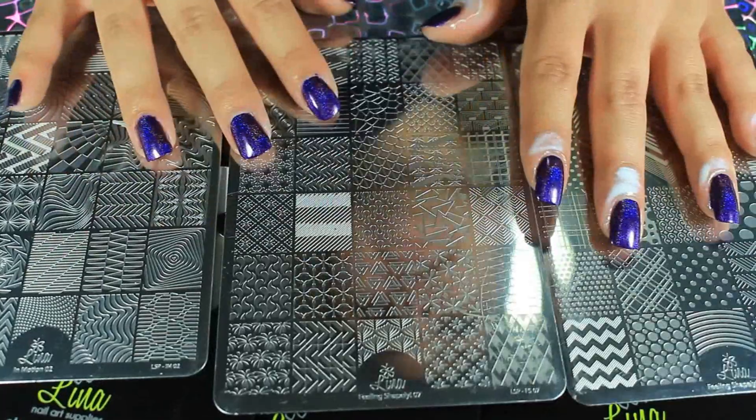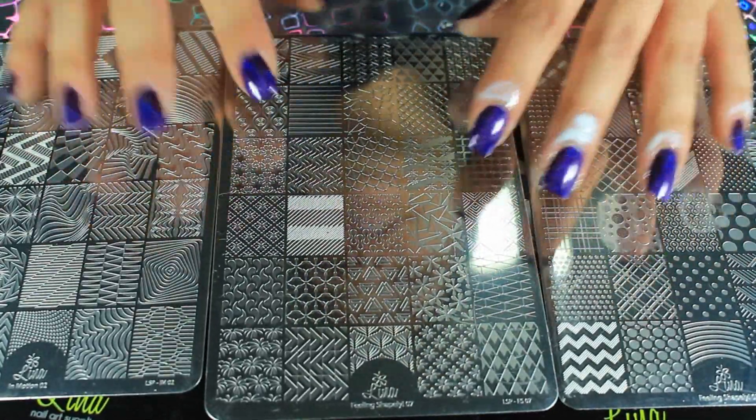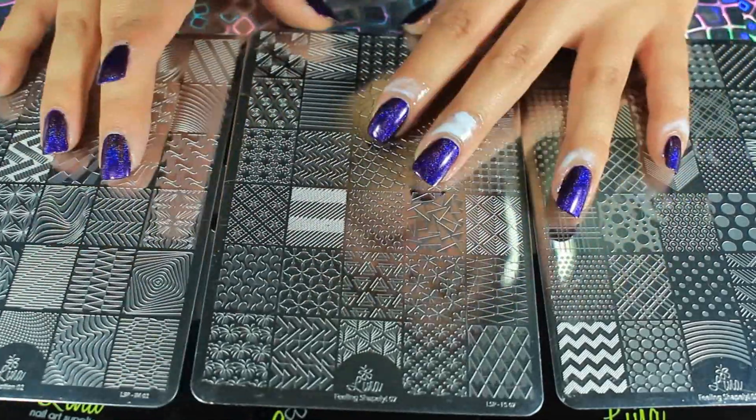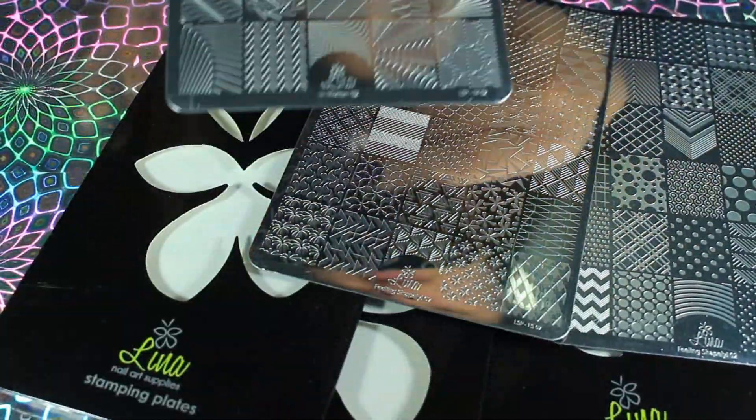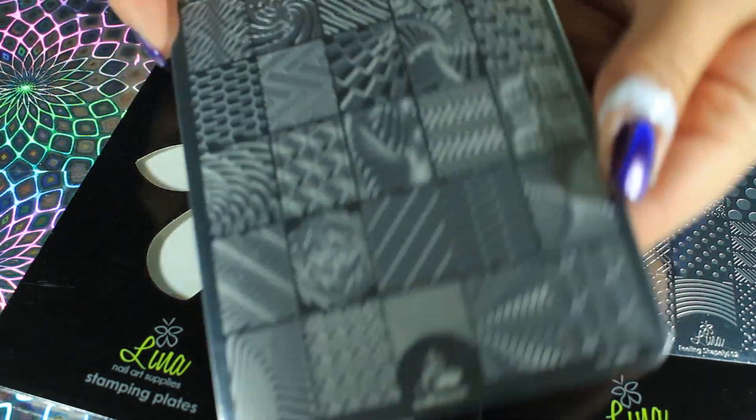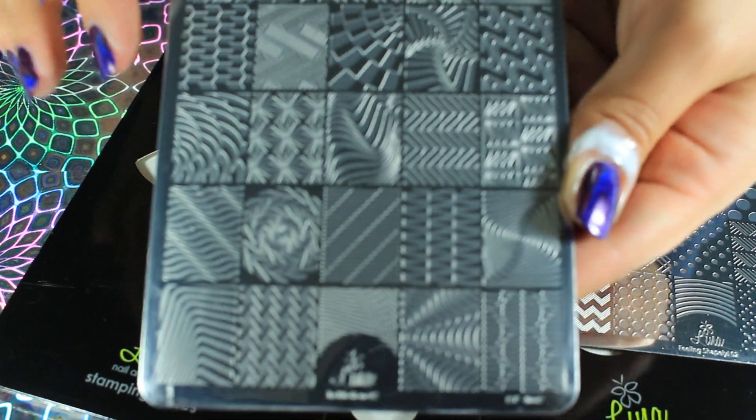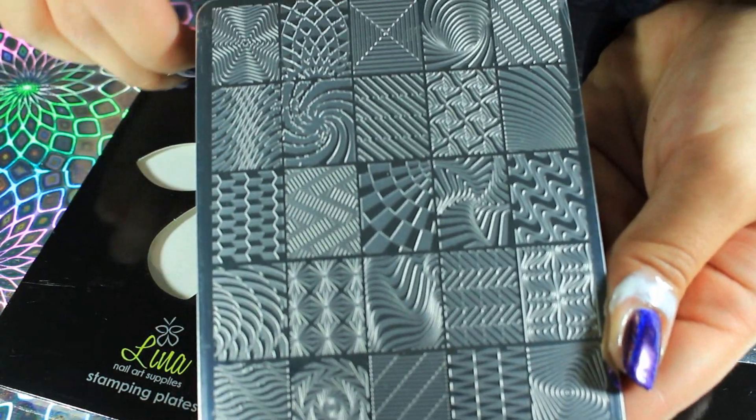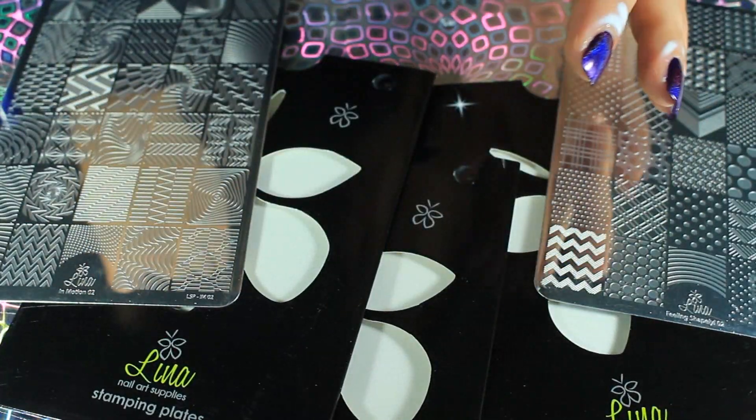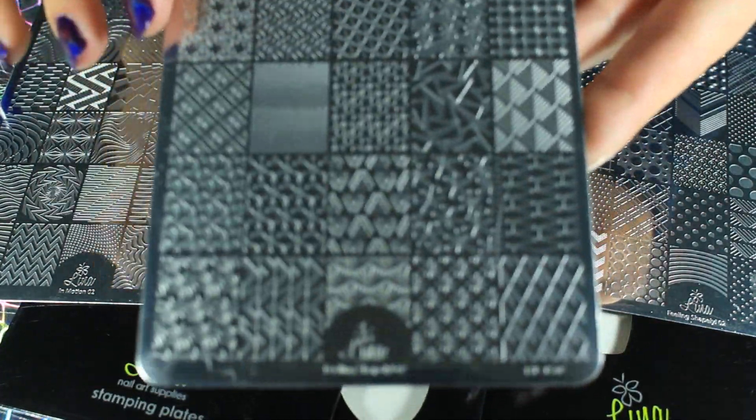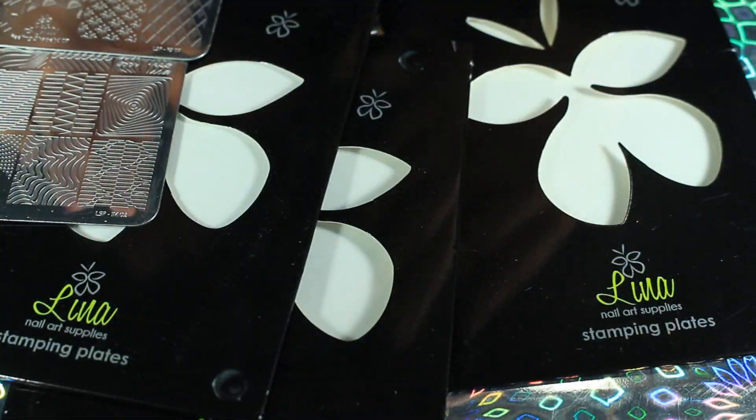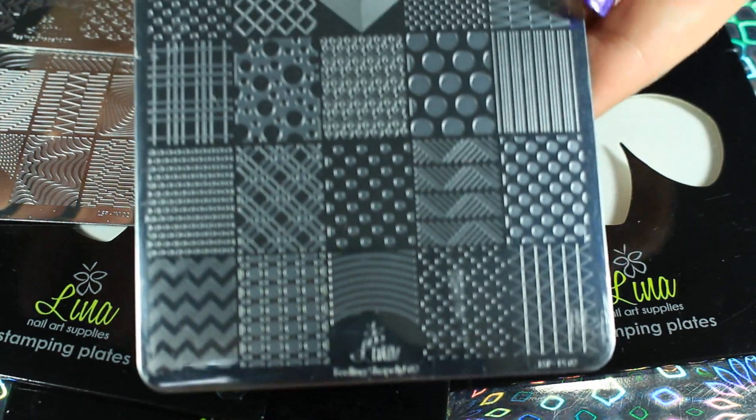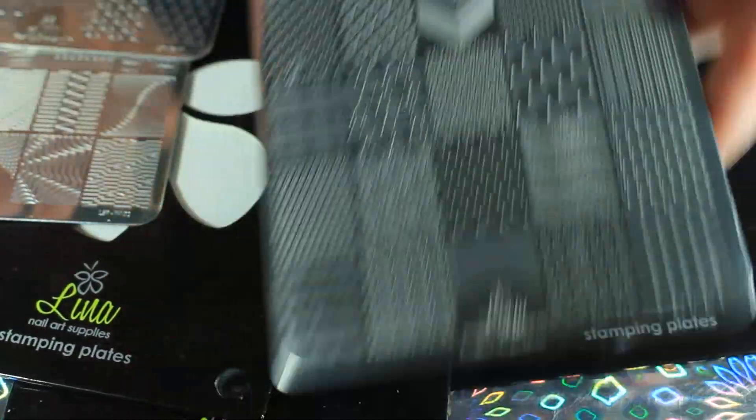These are Luna stamping plates and I'll put all the information down below because I don't have it in front of me to remember, but these plates are pretty awesome as you can see. I'm going to show you the plates up close. This one is Luna in Motion 2, this one is Feeling Shapely 7, and this one is Feeling Shapely 2.